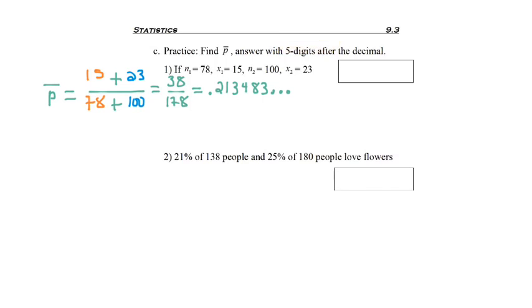But we're going to always use five digits after the decimal, so I'll be rounding on the 8. Since it's followed by a 3, the 8 will not round up, and P-bar will be .21348.